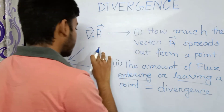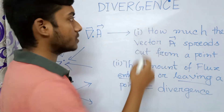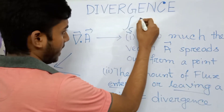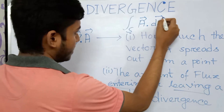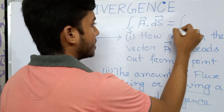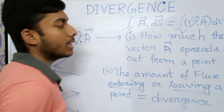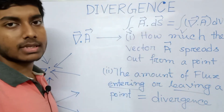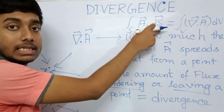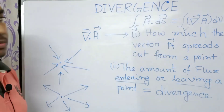We all know the Gauss divergence theorem. From this theorem we can write that the surface integral of A dot dS equals the volume integral of divergence of A times dV, where V is the volume enclosed by the surface S. Here del dot A is the divergence of A, and A dot dS is nothing but the flux of A. So there is a relation between flux and divergence.